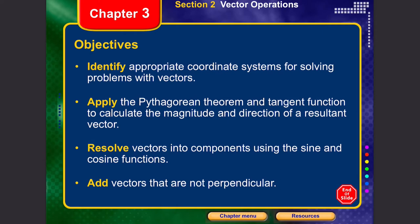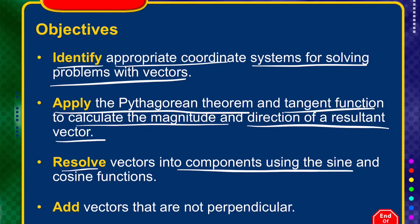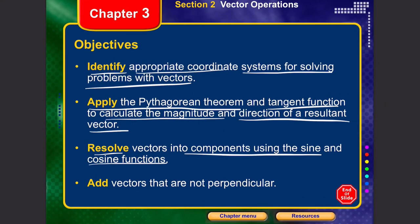Let's go into section two on vector operations. Here we'll identify appropriate coordinate systems for solving vector problems, apply the Pythagorean theorem and tangent function to calculate magnitude and direction of a resultant vector, resolve vectors into components using sine and cosine functions, and finally add vectors that are not perpendicular.